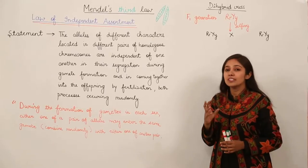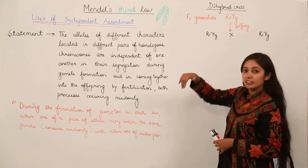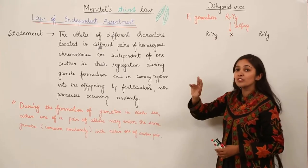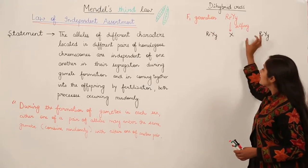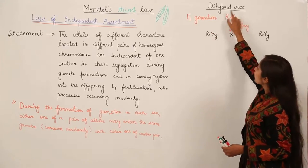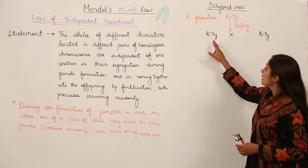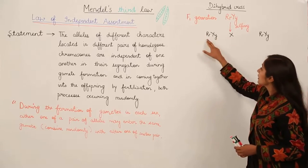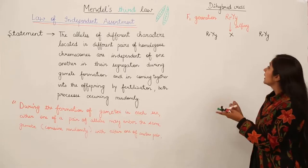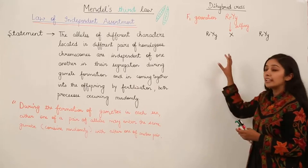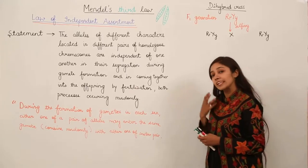Let's now come to the second generation. As I told you, in the F1 generation, Mendel did selfing. Selfing means he crossed the progeny with the same alleles. So we have the F1 progeny. Now we are going to see what is going to happen in the case of the second generation.